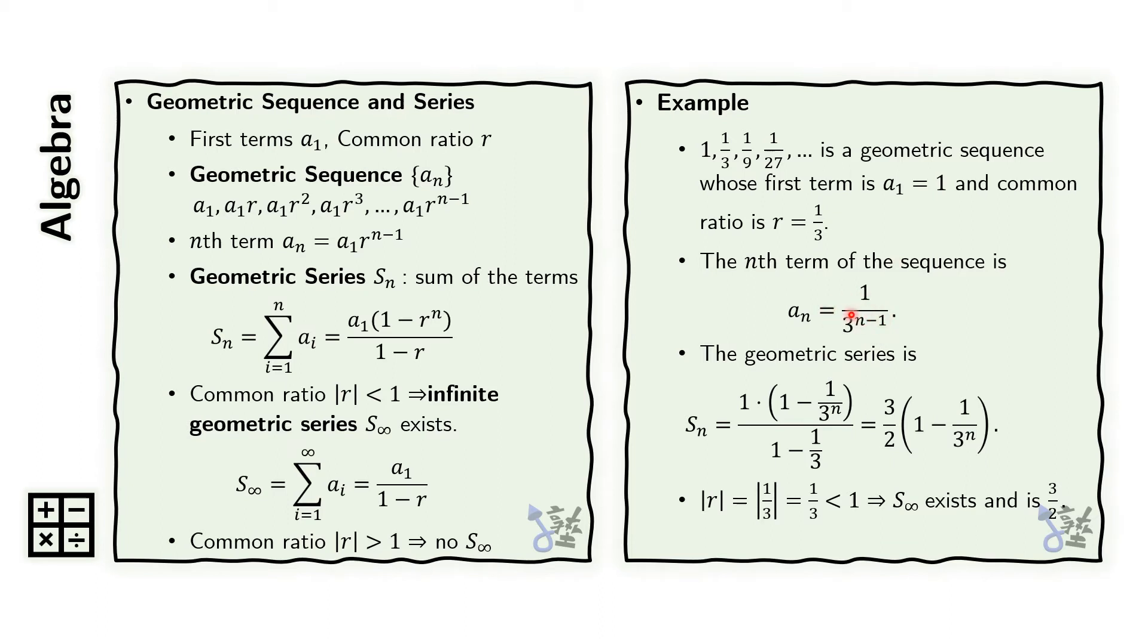which we obtained by substituting the first term and the common ratio into this formula. The geometric series for this sequence or progression can be obtained by substituting the first term and the common ratio into this formula.